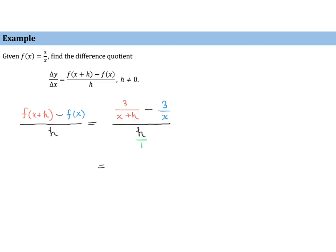Now let's look at these three denominators: we have x plus h, we have x, and we have 1. We can multiply by the LCD. The LCD is the product of x plus h, and x, and 1 — so that's x plus h times x. We multiply the numerator by that, and we also multiply the denominator by that same quantity. We're just multiplying by a fancy version of 1 to clear the fractions.